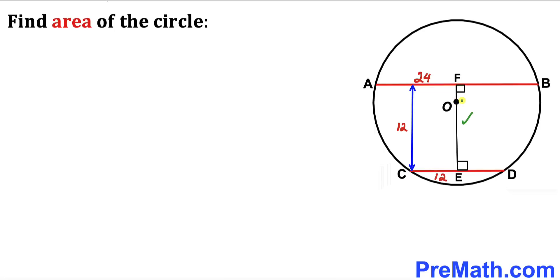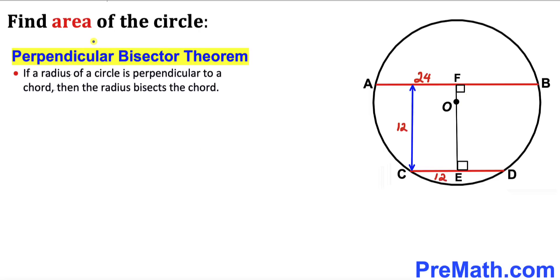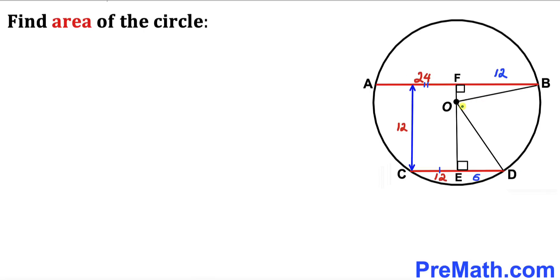Here I have dropped this perpendicular EF that passes through this center O. Let's recall the perpendicular bisector theorem: if a radius of a circle is perpendicular to the chord, then the radius bisects the chord. So this perpendicular EF is going to bisect chord AB into two equal parts, each equal to 12. Likewise, chord CD is divided into two equal parts, each equal to 6 centimeter.